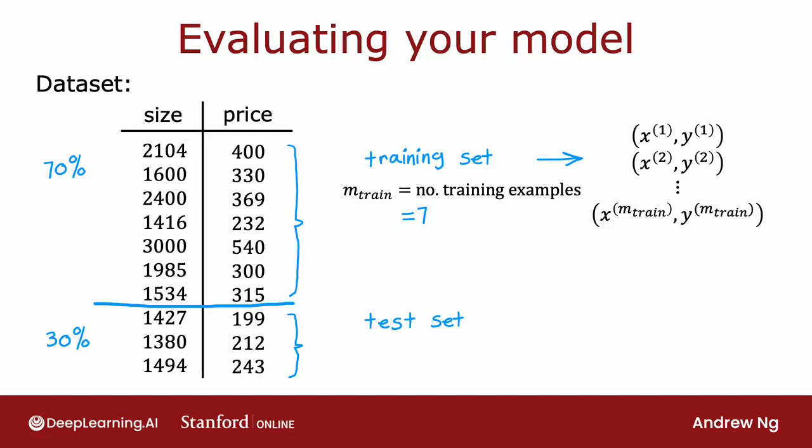And for the test set, I'm going to use the notation x1 subscript test, y1 subscript test to denote the first test example. And this goes all the way to xm test subscript test, ym test subscript test. And m test is the number of test examples, which in this case is three. And it's not uncommon to split your dataset according to maybe a 70-30 split or 80-20 split, with most of your data going into the training set and then a smaller fraction going into the test set.